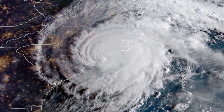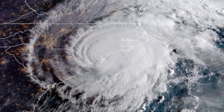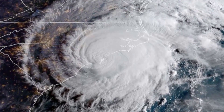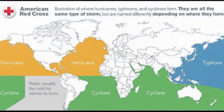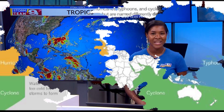Hurricanes and typhoons are ultimately the same thing, except they are named differently based on location. If it's above the North Atlantic, central North Pacific, or eastern North Pacific oceans, we call it a hurricane. If it hovers over the northwest Pacific ocean — usually East Asia — we call it a typhoon.